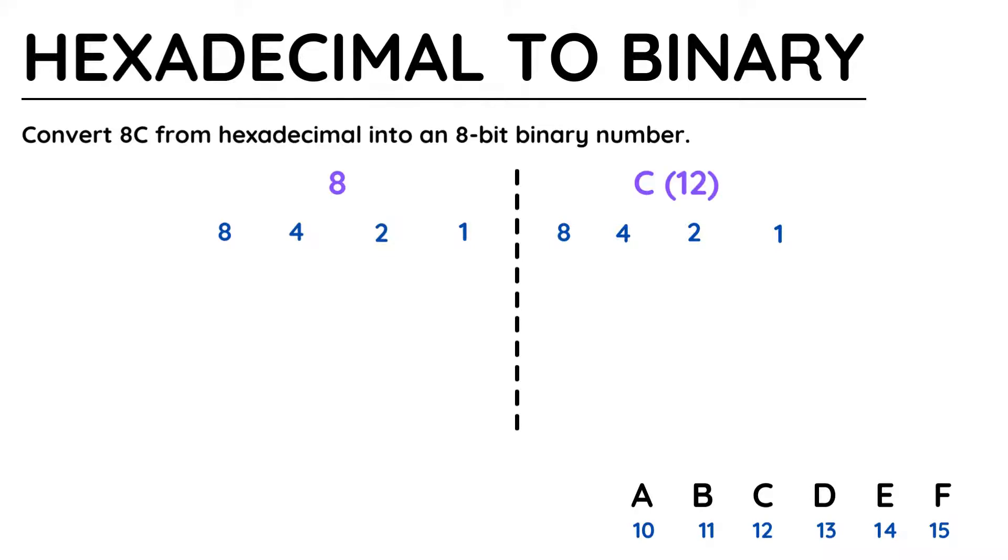I've noted that on the left I will represent the first character which is 8, and on the right I will need to represent C, which looking at my notes in the bottom right, I can see that C is equal to 12. Representing 8 is nice and easy as it is just a 1 beneath the 8, and the other 3 values are 0.